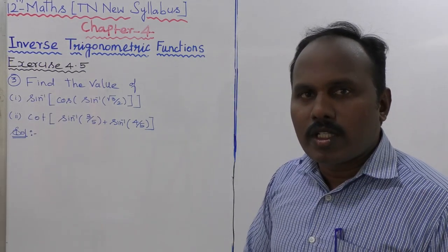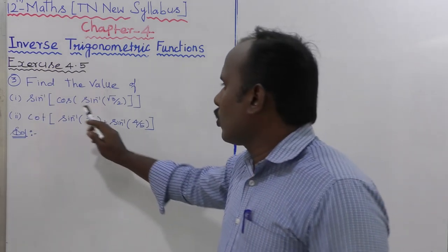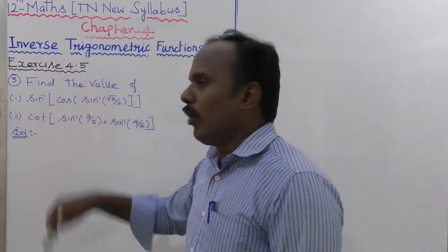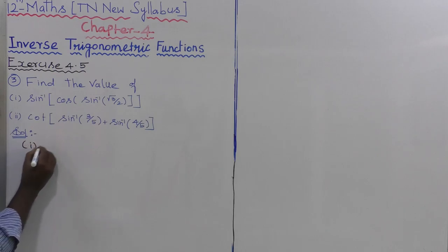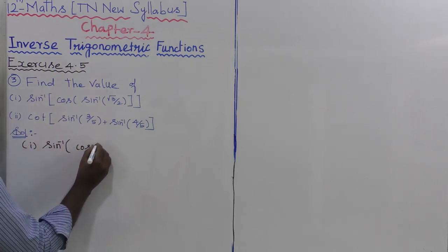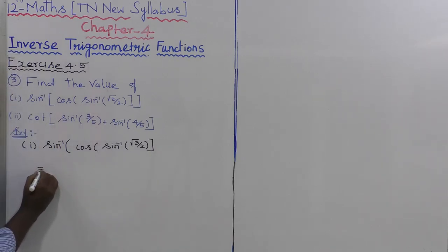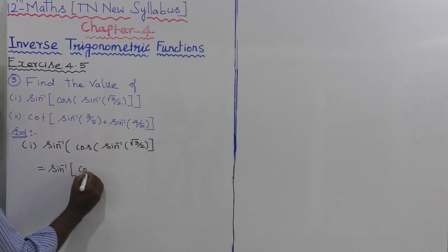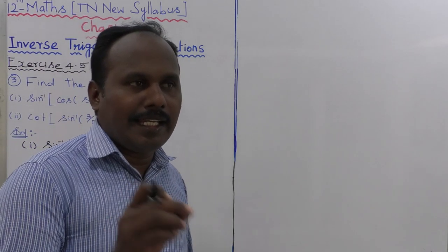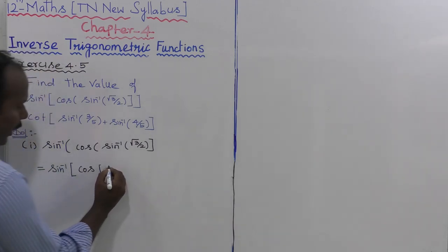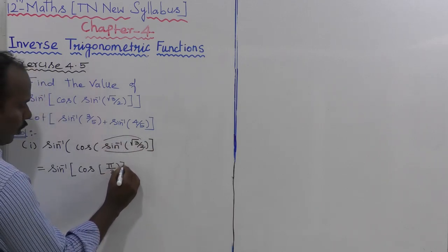First subdivision: sin inverse of cos of sin inverse of root 3 by 2. Root 3 by 2 means sin theta equals root 3 by 2, which gives theta equal to 60 degrees, that is pi by 3. So sin inverse of root 3 by 2 equals pi by 3.